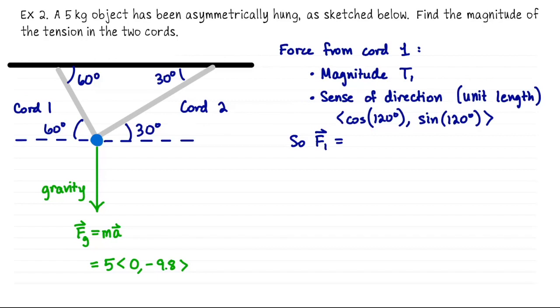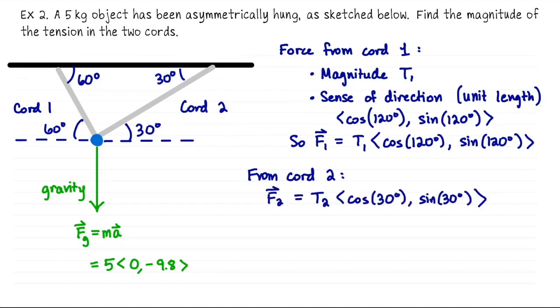So that means that the force that points us along cord 1 can now be represented as the product of the magnitude times the sense of direction. So it's T1 times the vector cos 120 sine 120. It's the exact same idea for cord 2. The angle is even easier because it's labeled on the picture. Well, think of the force pointing us in the direction of cord 2 as the product of its magnitude, which is an unknown tension, let's call it T2, times the sense of direction. And that we can read right off the picture. It's cos 30 sine 30.